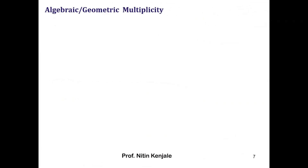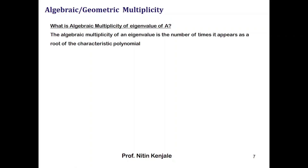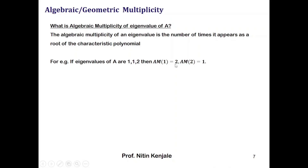You may wonder what algebraic and geometric multiplicity are. The algebraic multiplicity of an eigenvalue is the number of times it appears as a root of the characteristic polynomial — that is, the number of times that eigenvalue is repeated. For example, if the eigenvalues of A are 1, 1, and 2, then eigenvalue 1 has algebraic multiplicity 2, and eigenvalue 2 has algebraic multiplicity 1.